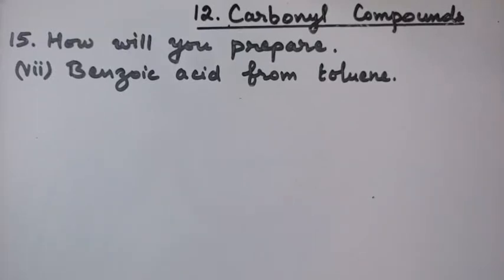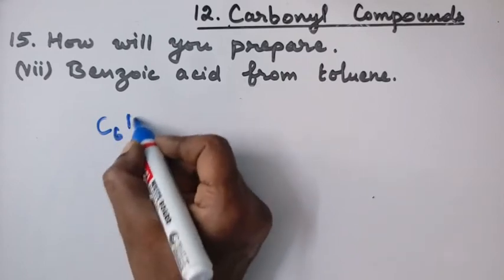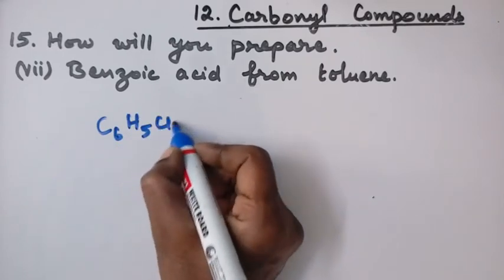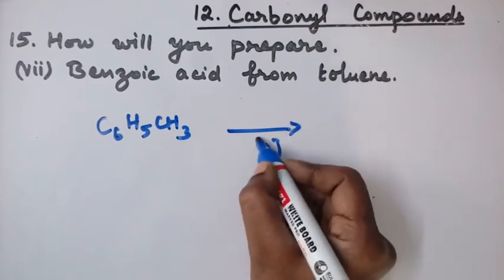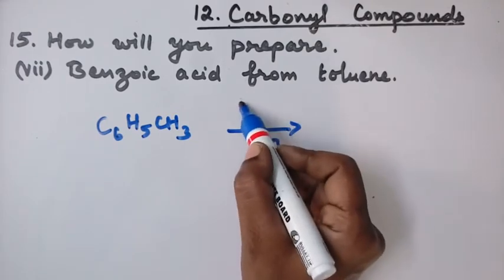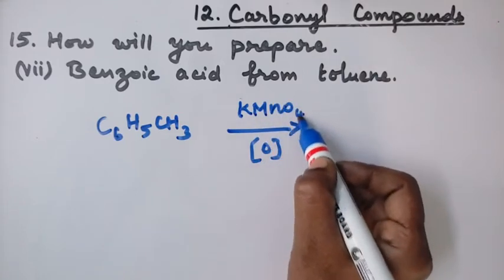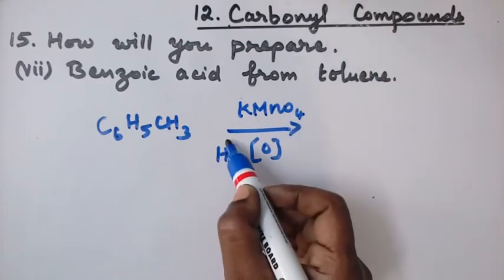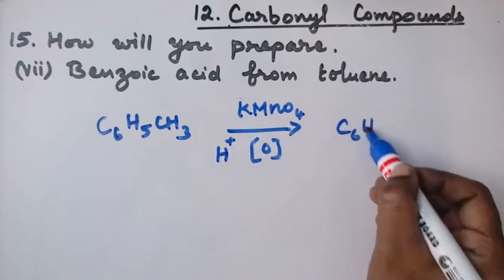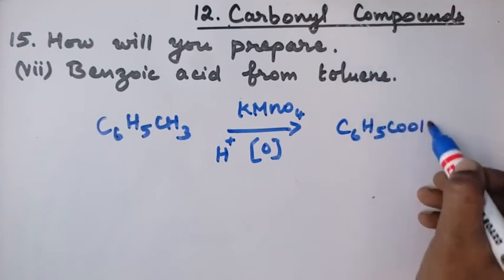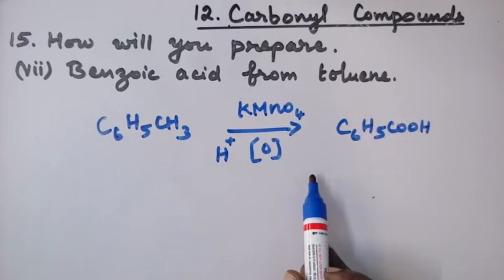Seventh one, benzoic acid from toluene. Toluene has the formula C6H5CH3. This on oxidation with strong oxidizing agent KMnO4 with dilute acid, it is converted to benzoic acid C6H5COOH. This reaction is side chain oxidation of benzene.